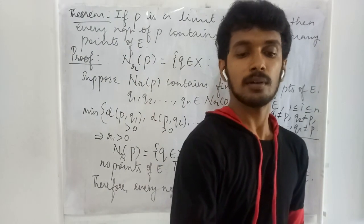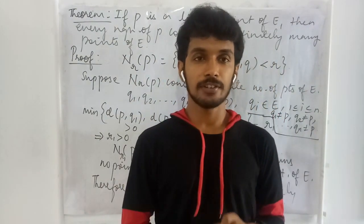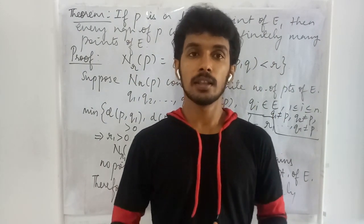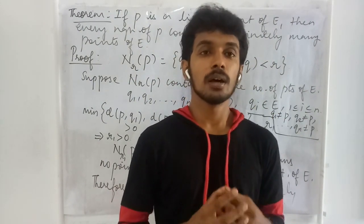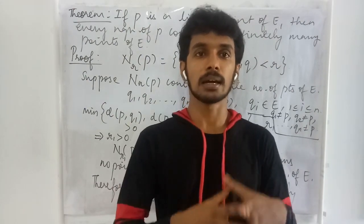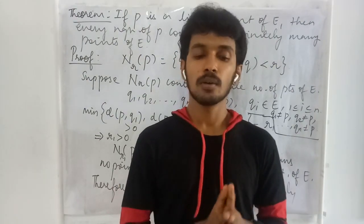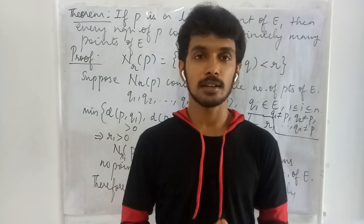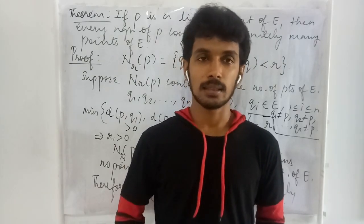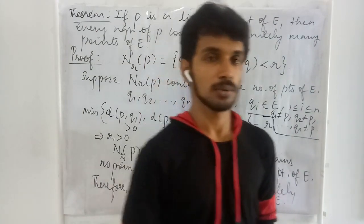In this lecture, we have seen the definition of a limit point and an isolated point. Then we proved that every neighborhood of a limit point contains infinitely many points of the set. Thank you for watching this lecture. If you have any queries, you can post them in the comments and they will be clarified within 24 hours. Thank you.